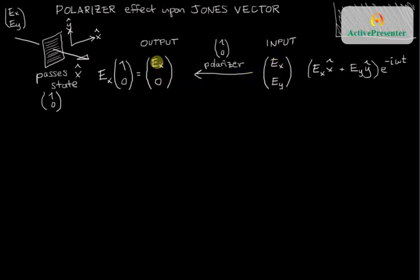So it's helpful, instead of just writing the final state as Ex, 0, to break it down into two parts and to say this 1, 0 state, that's the unit vector of the output state. It's a unit vector in the direction that the polarizer passes.